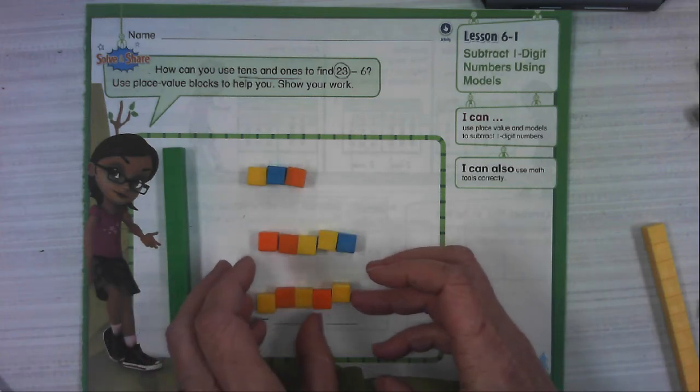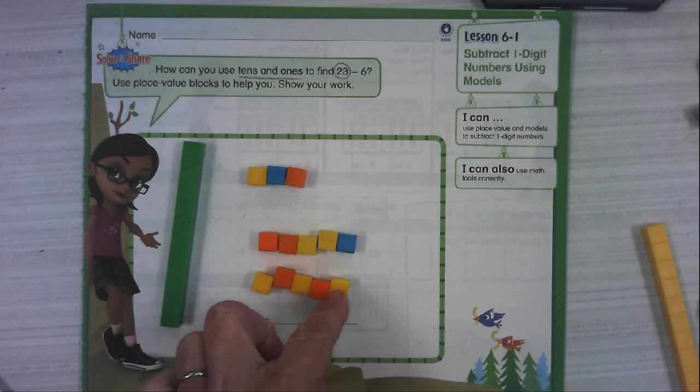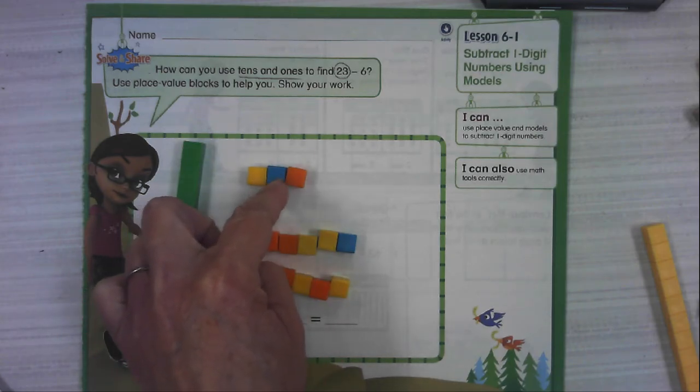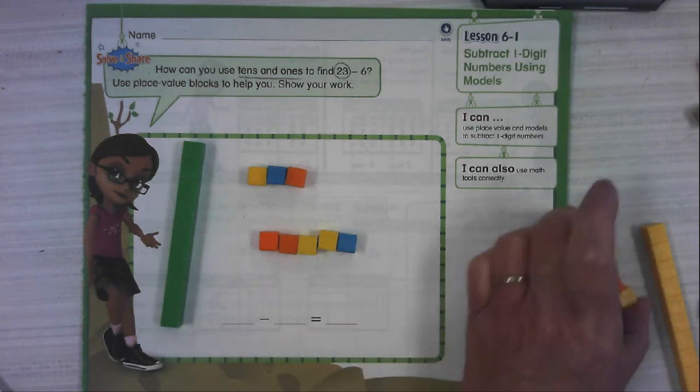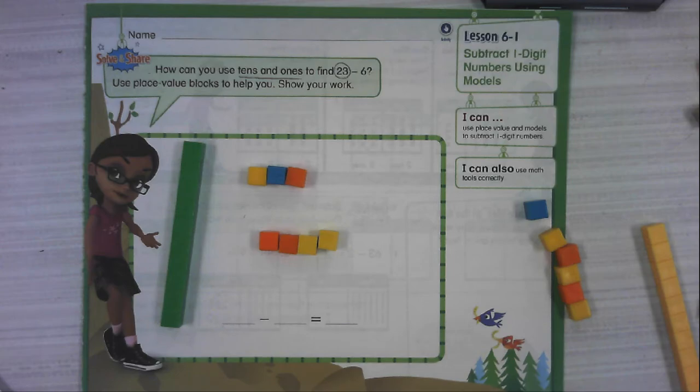So now we have 10, 11, 12, 13, 14, 15, 16, 17, 18, 19, 20, 21, 22, 23. We still have 23. Now can we take 6 away? Absolutely. There's 5 and here is 6. And so what's left is we have 1 ten and 7 ones.